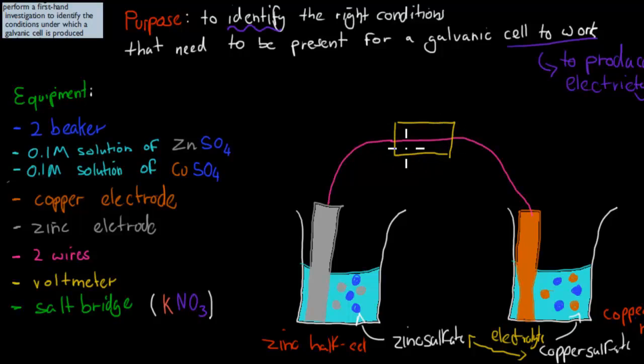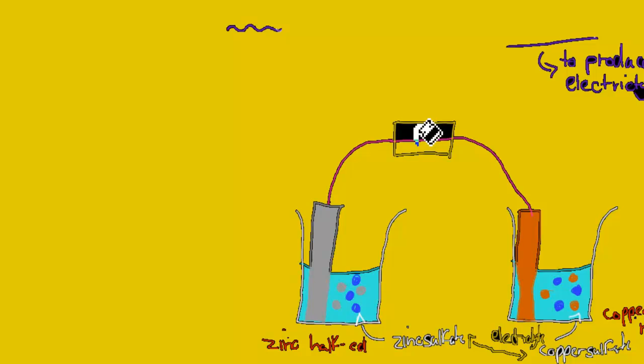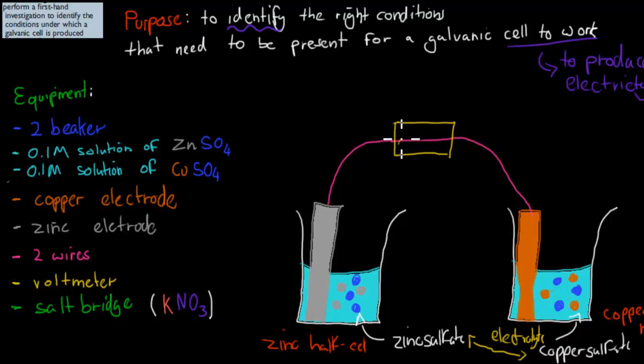This helps us to read the actual voltage. That was supposed to be our voltmeter. I was trying to be clever, but obviously that didn't work. So this is our voltmeter. We have our copper electrode, we have our zinc electrode, and we have our copper electrode.